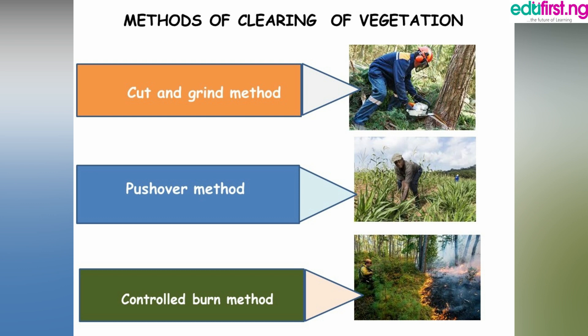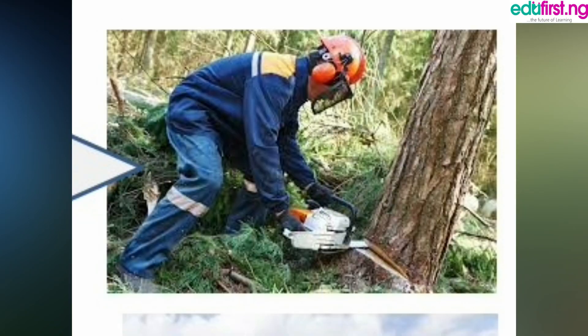There are several methods of clearing vegetation. For the purpose of this lesson, we shall look at: number one, the cut and grind method; number two, the push over method; and number three, the control burn method. The cut and grind method involves using giant grinders that mow down everything on the land and grind them into mulch. Tree stumps are not removed by this method but rather are cut level with the soil surface and left to decompose. Cut and grind is made possible by a high-pressure machine known as a disc mulcher.